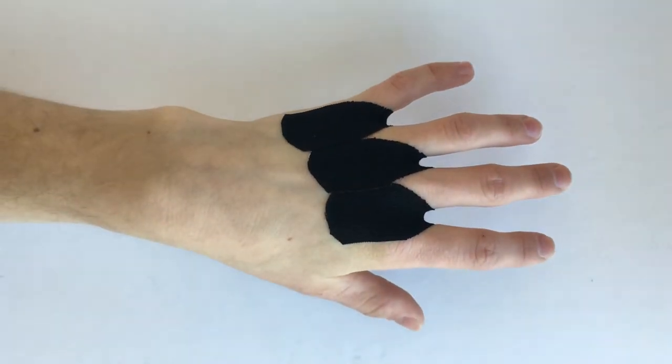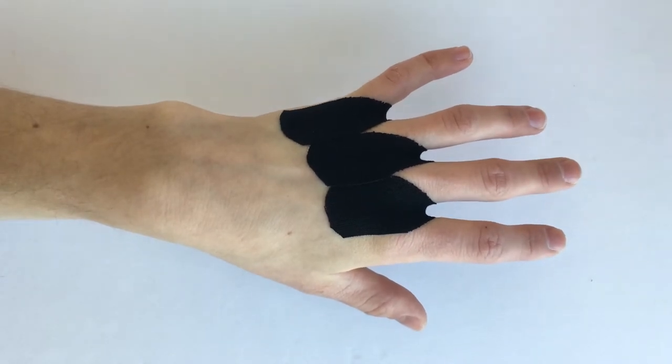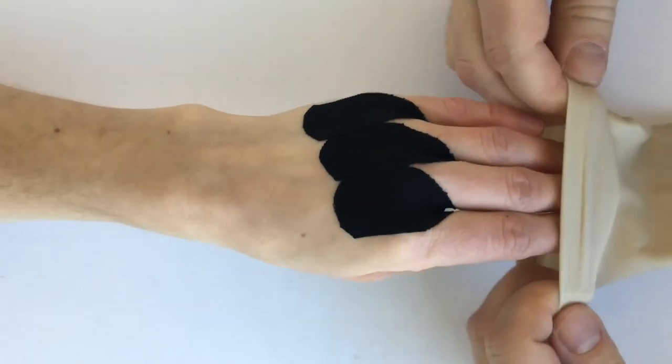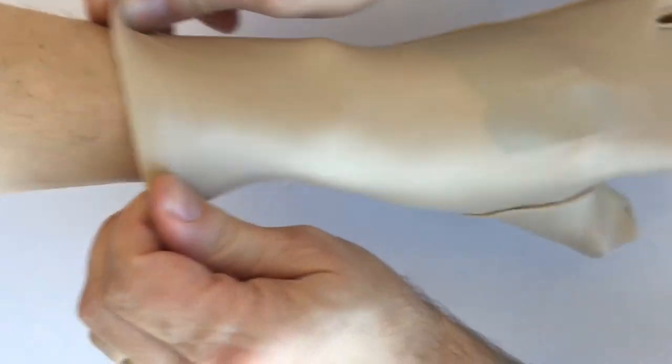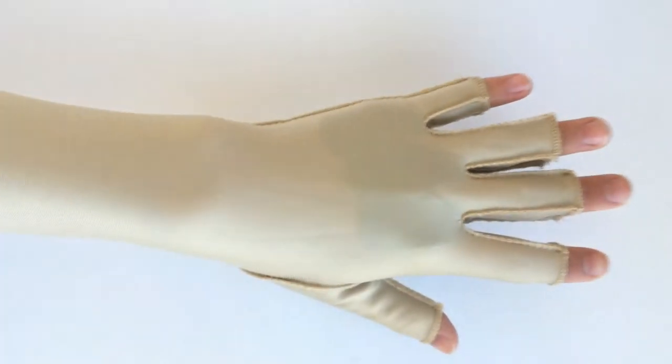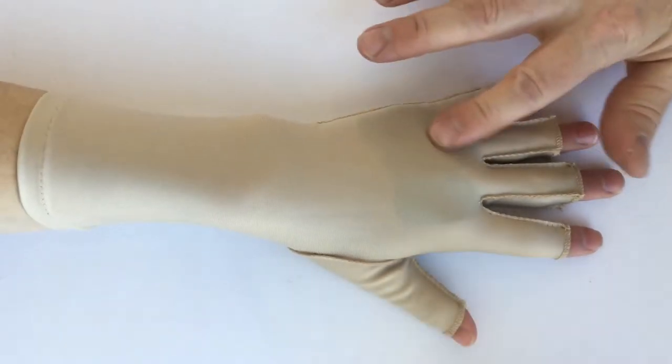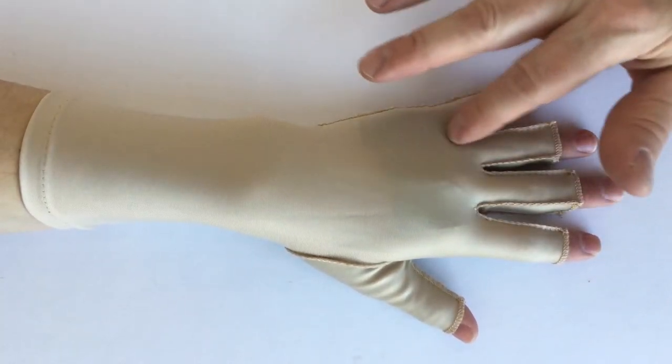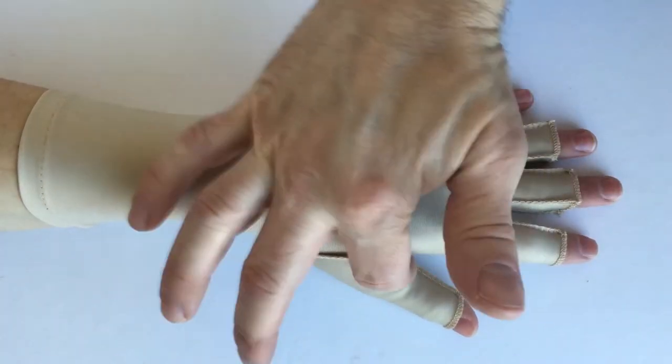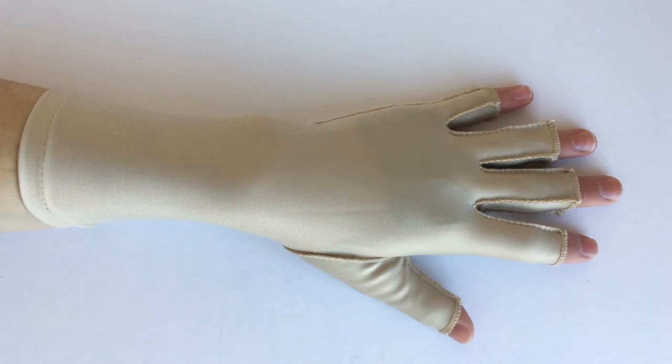Then once you have that done, you can apply your edema glove over top of those. Again, to have just a little bit more compression in each web space. You could also put one in the thumb web if that were beneficial.